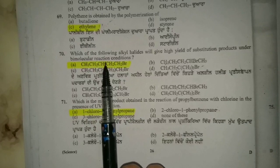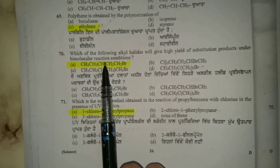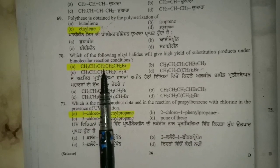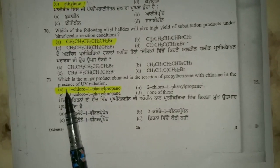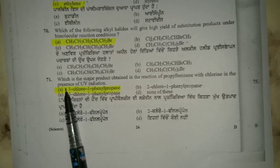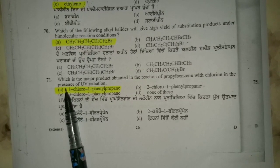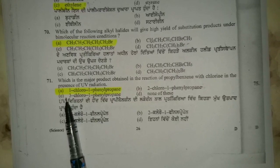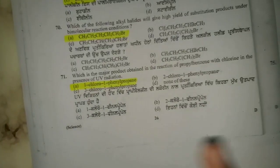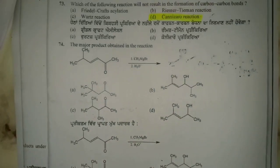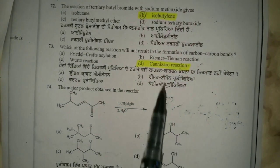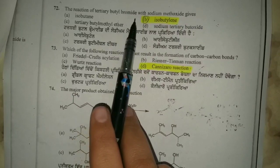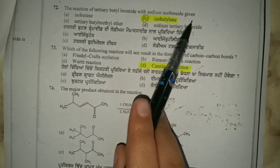Question 70: which of the following alkyl halides will give high yield of substitution product under bimolecular reaction conditions? Option number A is correct. Question 71: which is the major product obtained in the reaction of propylbenzene with chlorine in the presence of UV radiation? Option number A.